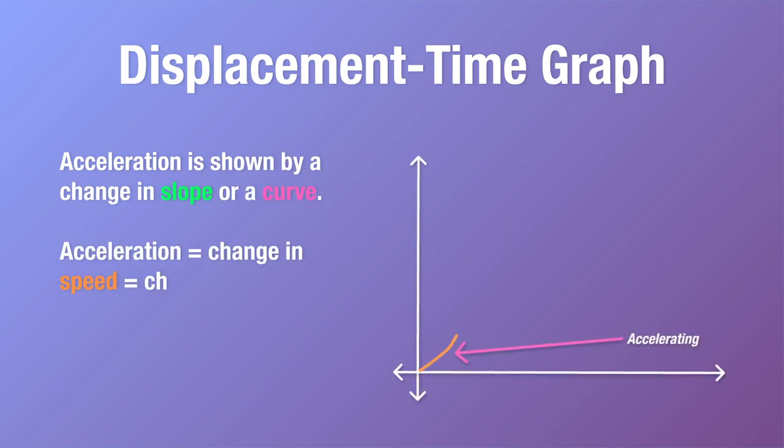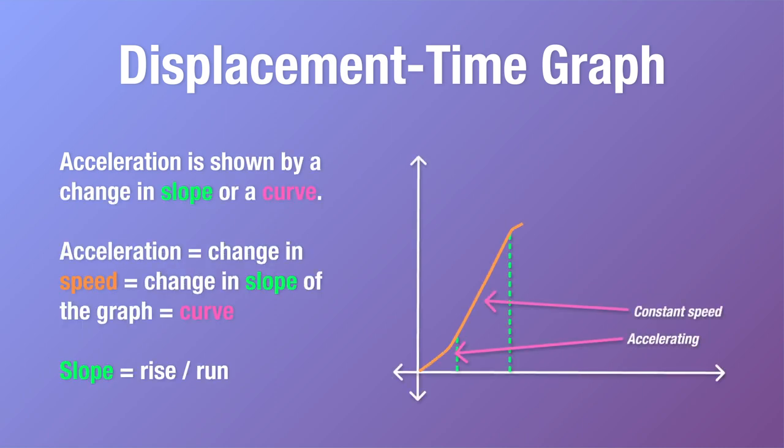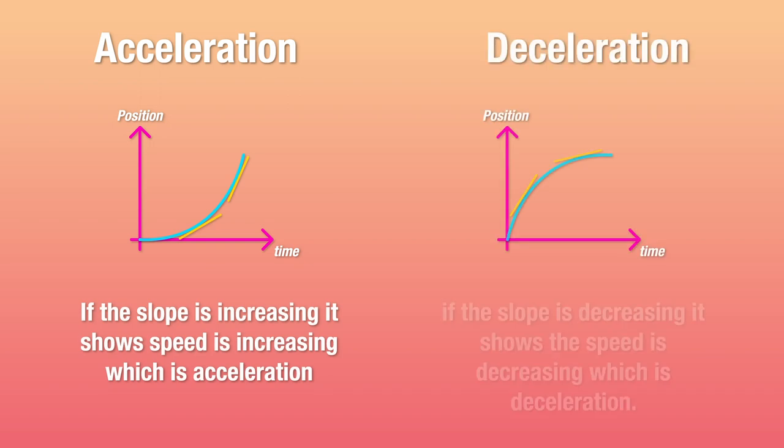Now this graph can also capture acceleration and deceleration, and it does this in the form of curves. Since acceleration is an increase in speed, and speed is shown by the slope of the graph, a curve where the slope is becoming more positive, that is, it's going upwards, it shows acceleration. On the other hand, a curve where the slope is becoming more negative, or going downwards, it shows deceleration.